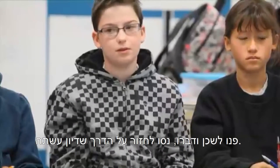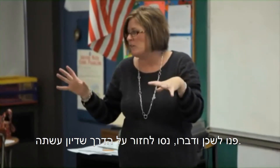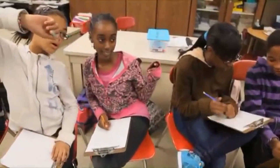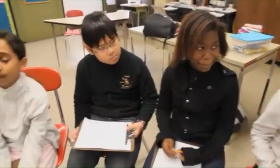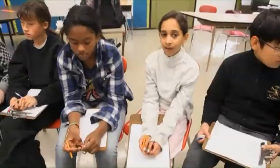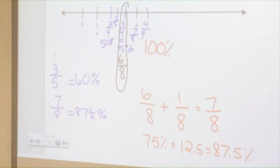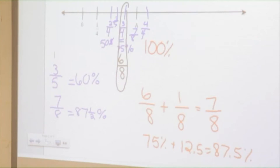Turn and talk with your neighbor. See if you can follow what Seanna did and we'll come back and share. About 15 seconds, turn and talk. Ella, what do you think? Can you just repeat back, kind of in your own words, what Seanna did? She did 6 eighths plus 1 eighth, which is 7 eighths — 1 eighth more than 6 eighths, which is 75%. And so she did 75% plus 12.5% to get 87.5%.